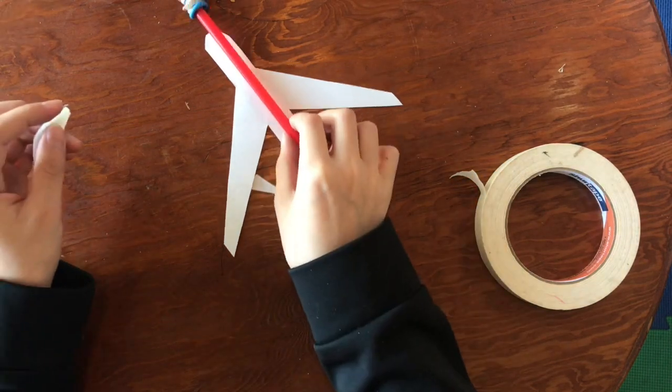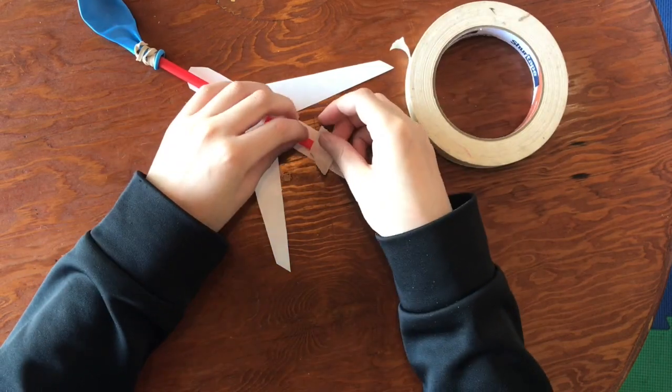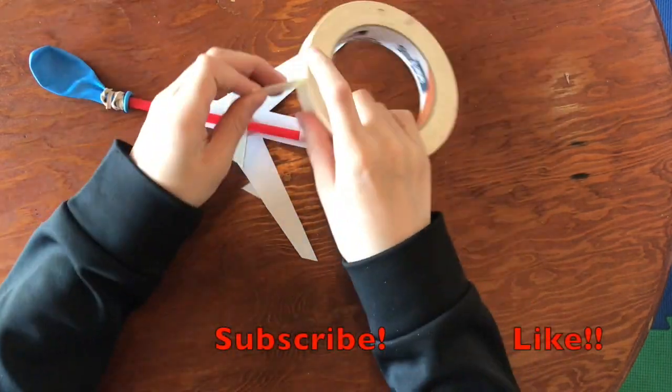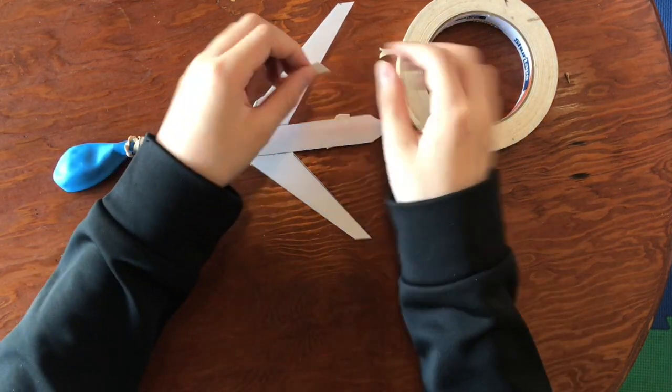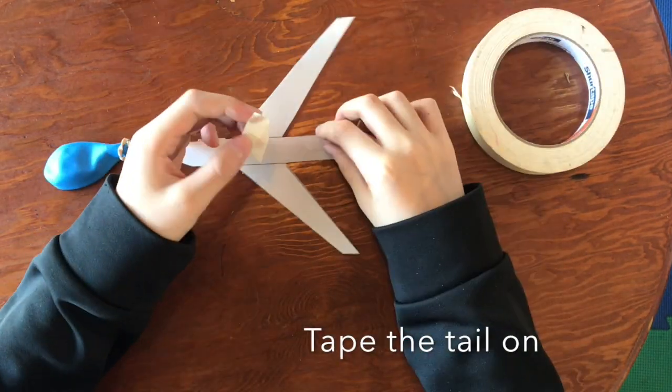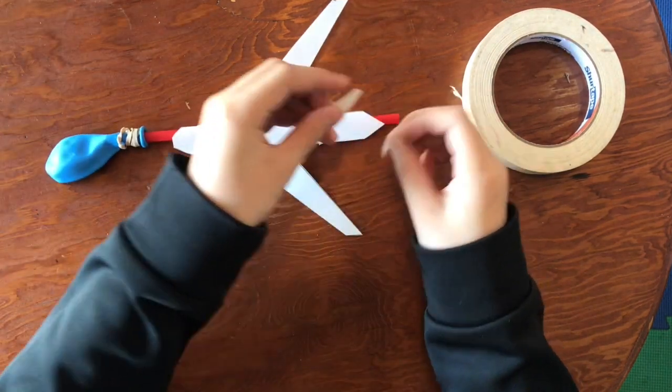Now, tape the airplane model onto the straw. Now do the tail wing.